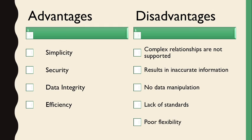The advantages of the hierarchical data model are: first, simplicity — data in a natural hierarchical relationship is available easily, so it is very simple. Second, security — the database system can provide different security features. Third, data integrity — data integrity is highly promoted because of its inherent parent-child nature. Fourth, efficiency — this model is efficient when the database contains a large number of relationships, where one root has many child nodes (1-to-n relationships).